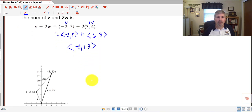So v plus 2w, our v from the origin was negative 2, 5, and then 2w took us all the way to 4, 13. So we plot that particular point, and now we know that that's 2w. And then v plus 2w is from our origin or from the start of v to our new point, 4, 13. So that's our new vector, v plus 2w.